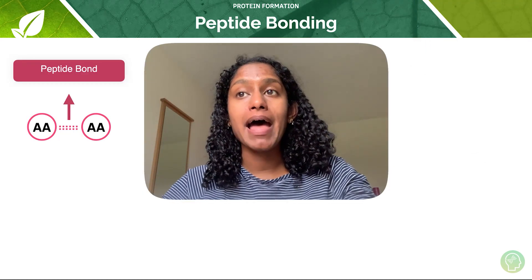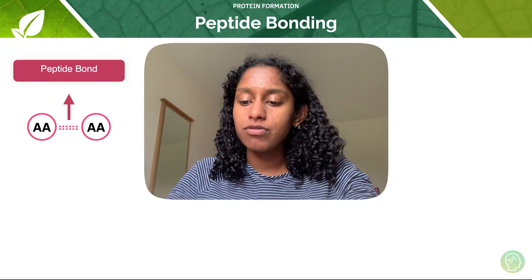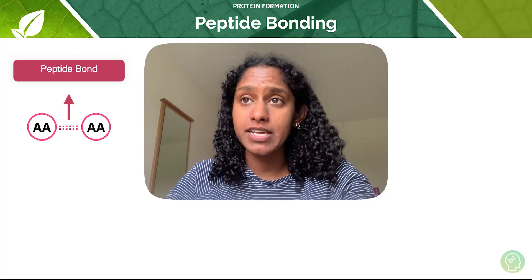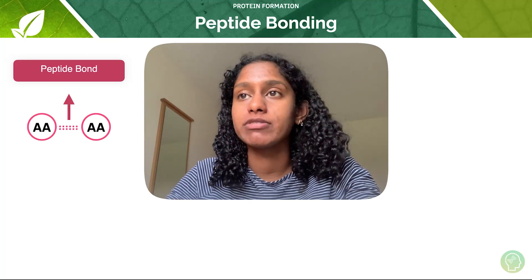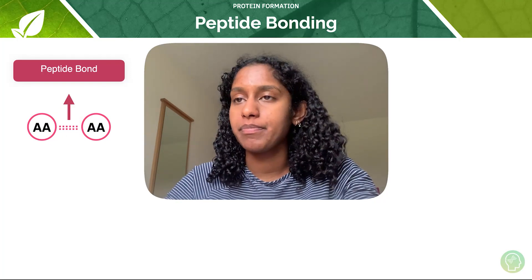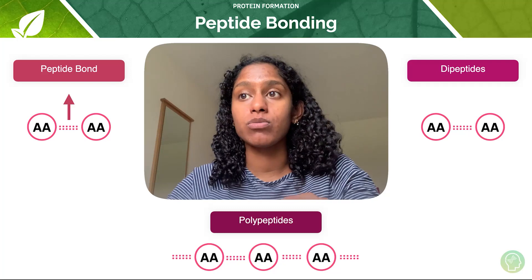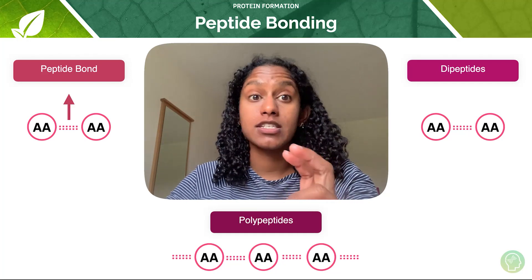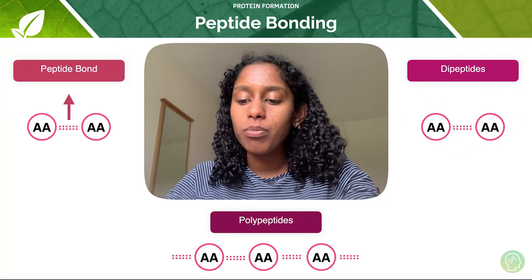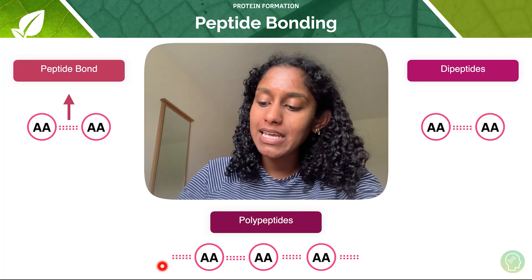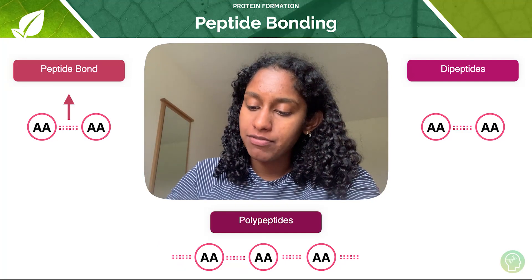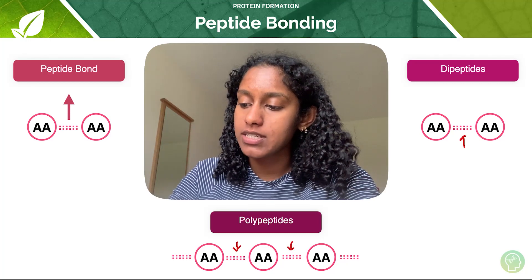Let's start off by looking at the peptide bond. Peptide bonds are formed by condensation reactions. Condensation reactions join amino acids together by forming peptide bonds between them. These reactions can either form dipeptides — 'di' derived from the Greek stem for two, so two peptides together — or polypeptides, 'poly' for many. Many amino acids joined together form polypeptides, and each of them have this peptide bond in between them that is formed by a condensation reaction.